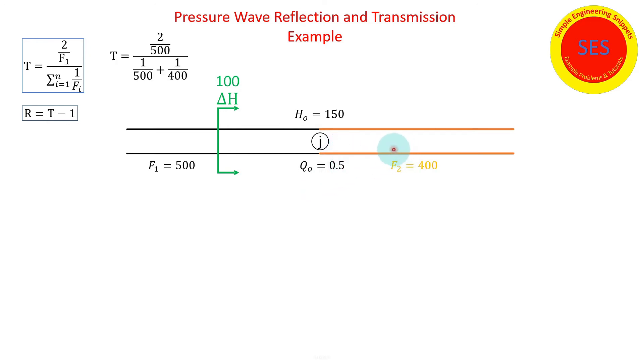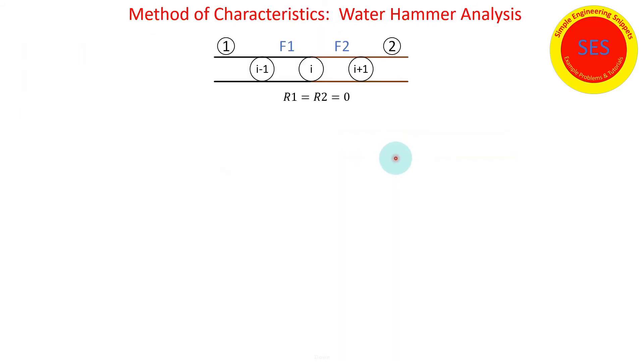So this is the example we worked through before, just repeating everything. Now we're going to have to define our nodes i minus one, i, and i plus one. Again, pipe one is to the left of node i, pipe two is to the right of node i. And we are going to consider the case where the frictional resistance is equal to zero.